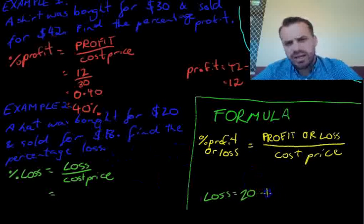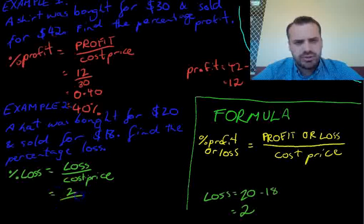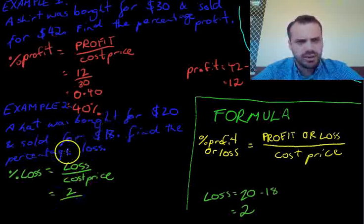That means we made a loss of $2. So, $2 divided by the cost price. The hat was bought for $20.